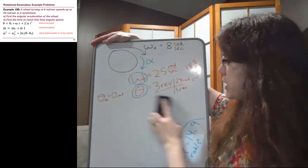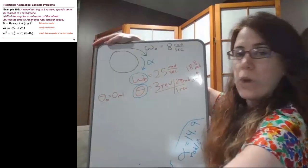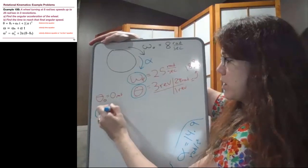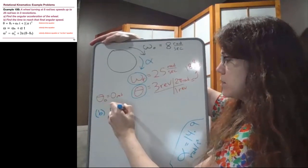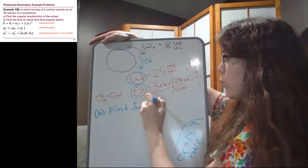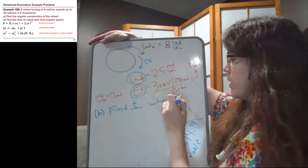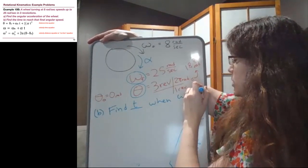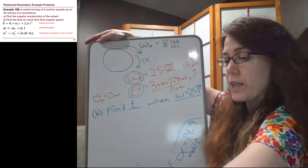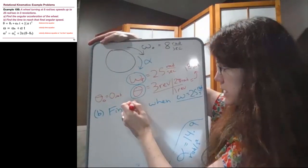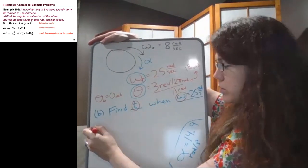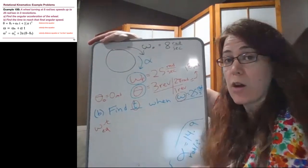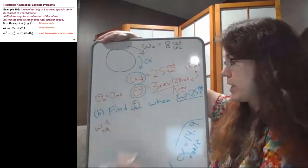For part B, we're asked to find the time when we reach that final angular speed. So we're finding T when ωfinal is 25 rad/s. By filling it in with those particular letters, T and omega, we're using the omega-T equation. Rephrasing the question allows us to figure out exactly what tool we should pick up.